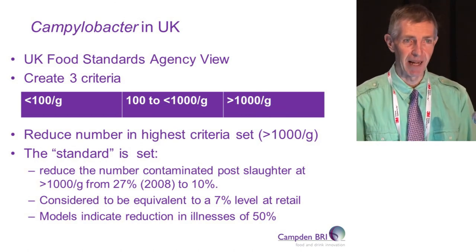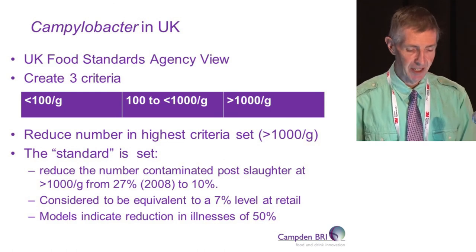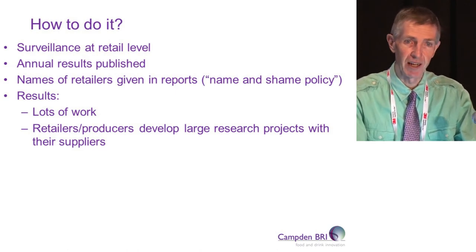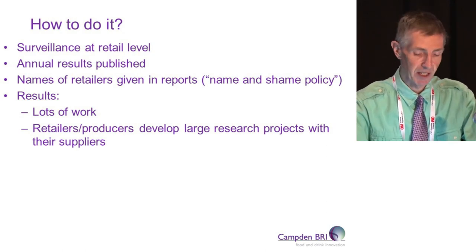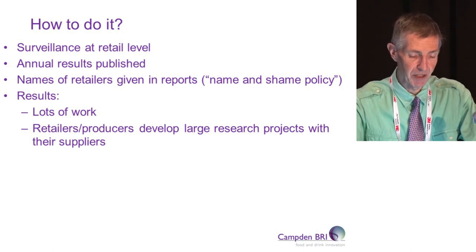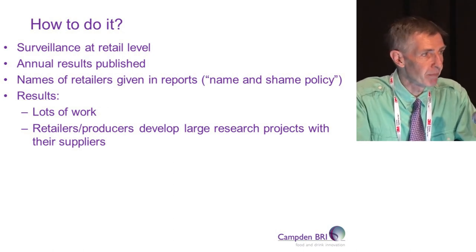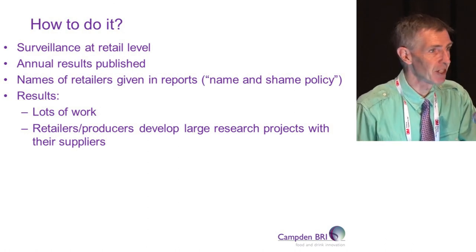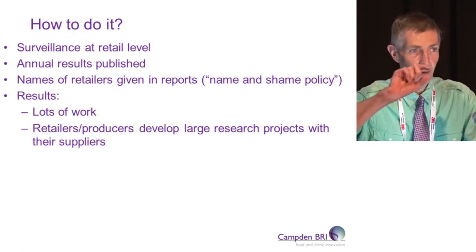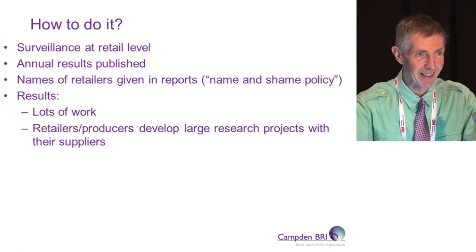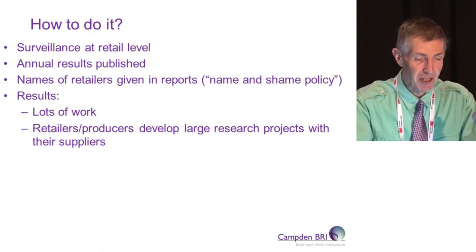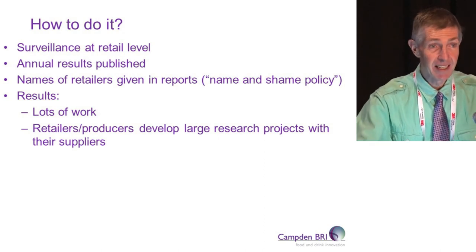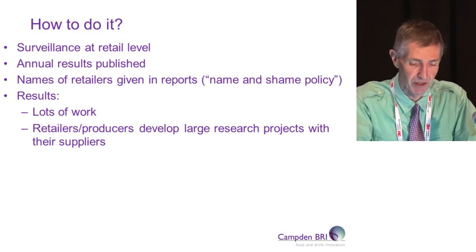Without introducing legislation, they put in place through a public health agency a large-scale surveillance programme running over a three-year period. They published results every six months on the internet and introduced what they called a name-and-shame policy: all retailers tested were named with the percentage causing greater than 1000 per gram campylobacter. The retailers and producers who didn't want to be associated with being top of that list did a large amount of research on how to reduce campylobacter levels in the poultry they were selling.